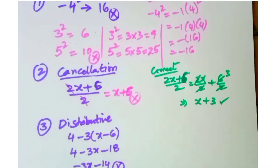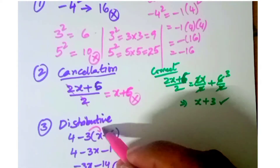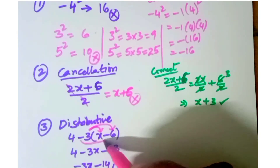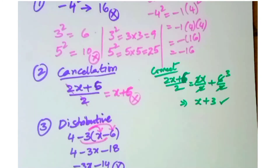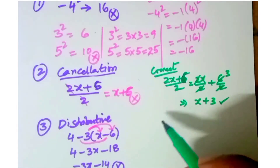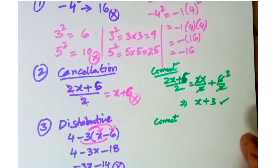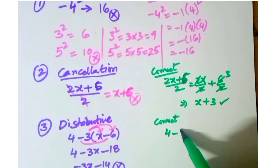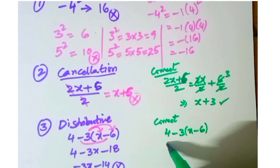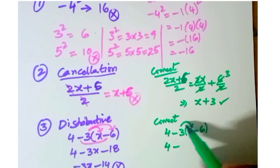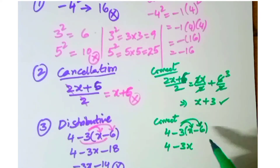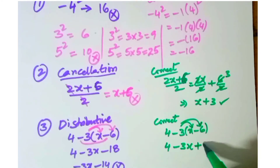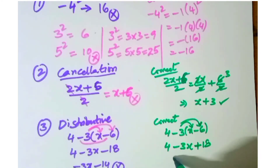The mistake here is that the distribution is not done properly — the negative symbol is not multiplied correctly. Minus into minus gives plus. The correct process: four minus of three into x minus six. Distributing gives four minus three x, then minus into minus six gives plus 18, so four plus 18 minus three x equals 22 minus three x. That is correct.